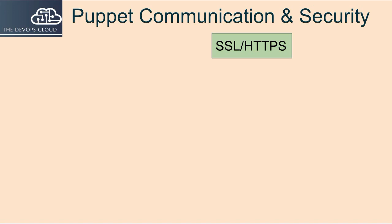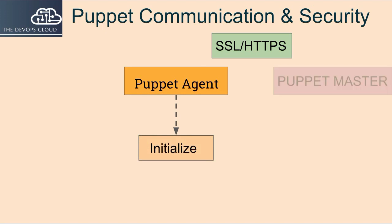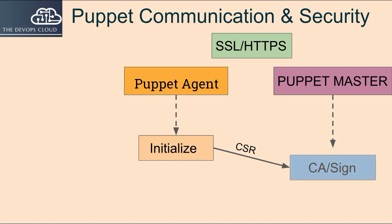When the Puppet Agent software runs for the first time on any Puppet node, it generates a certificate and sends the certificate signing request to the Puppet Master. Before the Puppet server is able to communicate and control the Agent nodes, it must sign that particular Agent node's certificate.